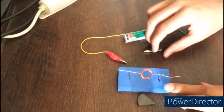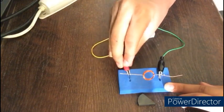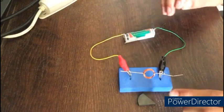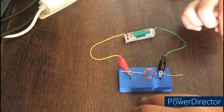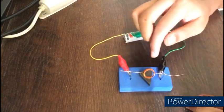Now, take the alligator pin and attach it to the pins. Now, this is a closed circuit. Take a magnet and place it below the copper coil.